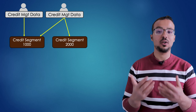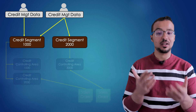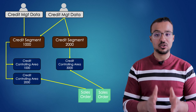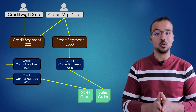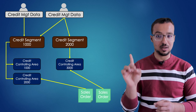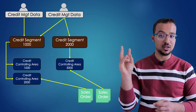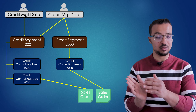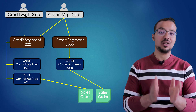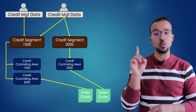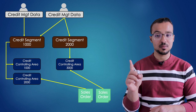Then we define the credit controlling areas and assign every credit controlling area to one credit segment. One credit segment can have multiple credit controlling areas assigned to it, but every credit controlling area can only be assigned to one credit segment.